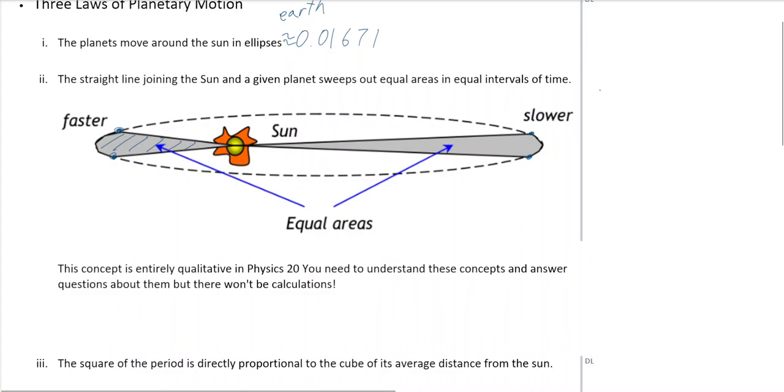But if you imagine on the other side, it goes from here to here. And you can see that it must be traveling slower because the same amount of time, so equal interval of time, this is a shorter distance than this. So it must be going faster here and slower here.